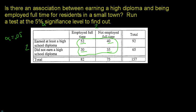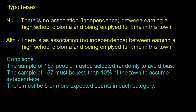The null is that there is no association between earning a high school diploma and being employed full-time in this town — having a diploma has no impact on having a full-time job. The alternative is that there is an association between earning a high school diploma and being employed full-time. You don't have to claim a direction; you're just saying these two variables are connected.